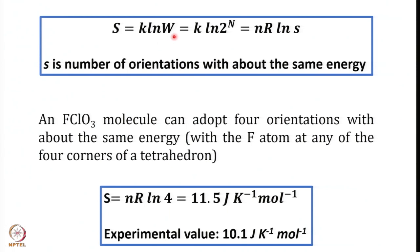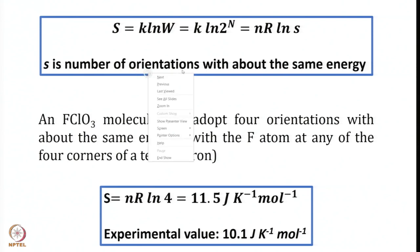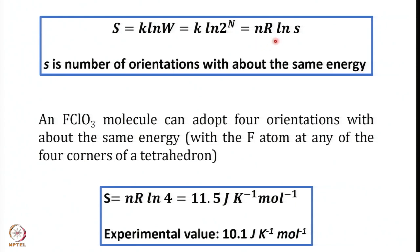We discussed that S = K log W, and in the example of carbon monoxide, or a molecule like AB in which the dipole moment is very very small, there are two possible orientations — AB or BA — for one molecule, and for N molecules W will be equal to 2 raised to the power N. You can bring N in along with K, and it becomes NR log S, where S is the number of orientations with about the same energy. As a general formula to evaluate residual entropy, you can use S = NR log S.